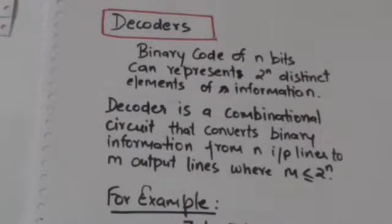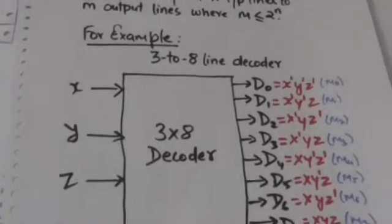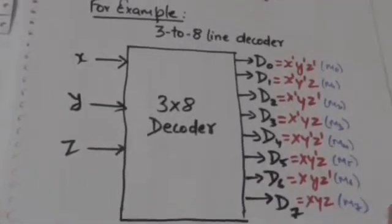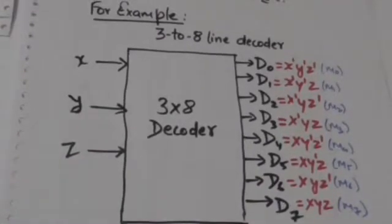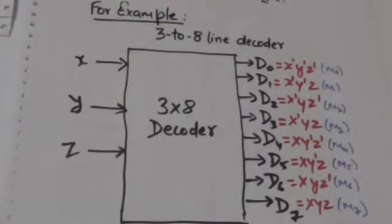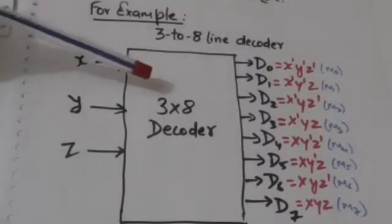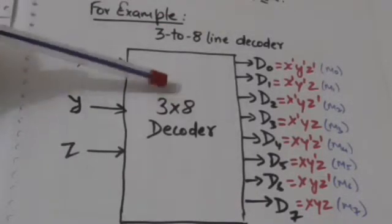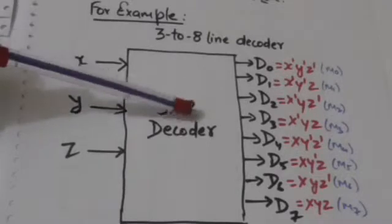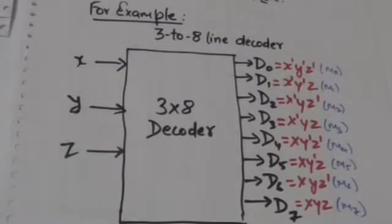This will be more clear after the example of a 3-to-8 line decoder. This decoder has three input lines and eight output lines, and is represented as 3×8, where 3 is the number of input lines and 8 is the number of output lines.